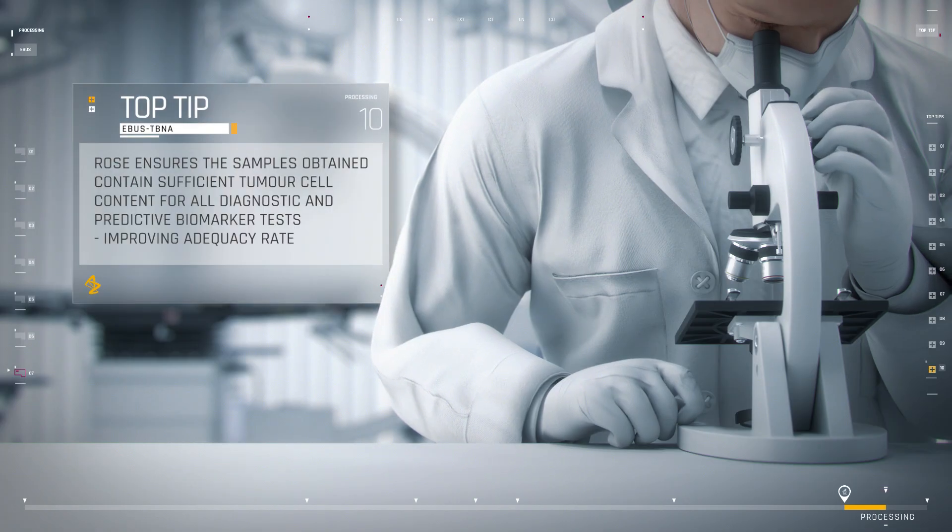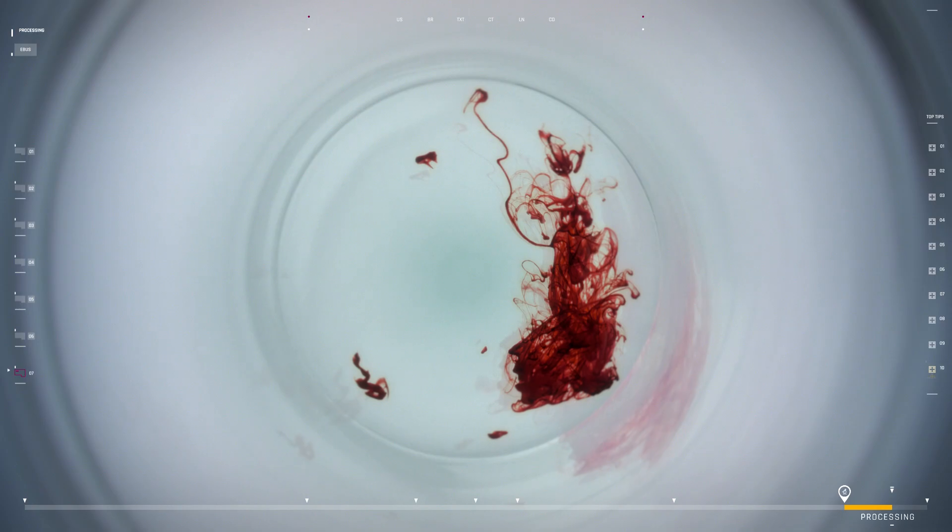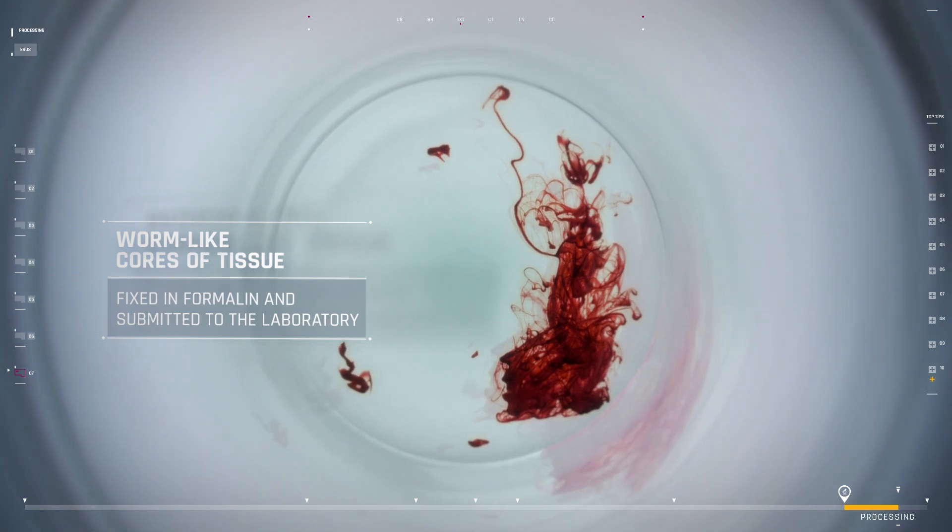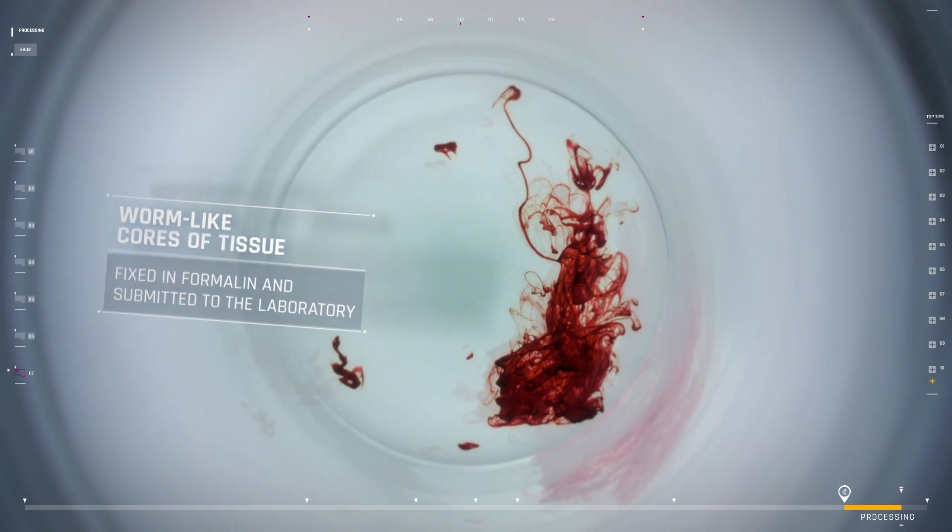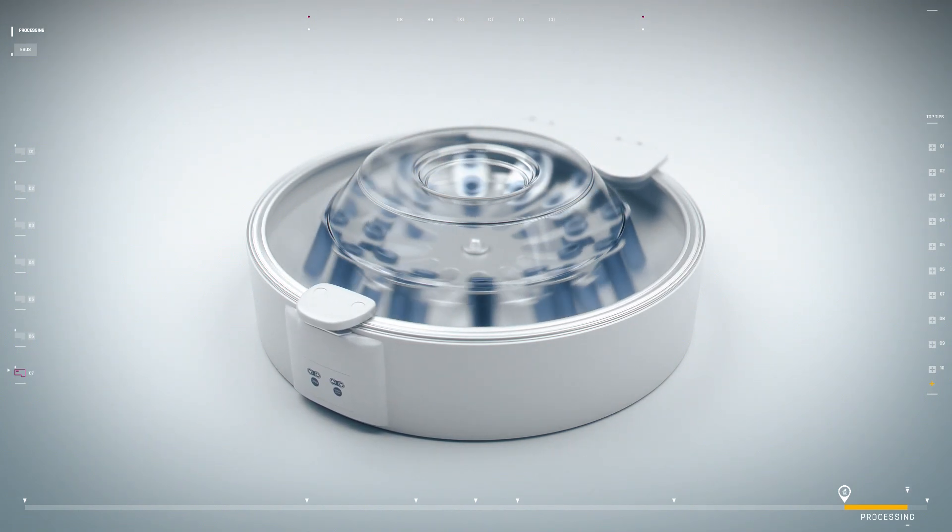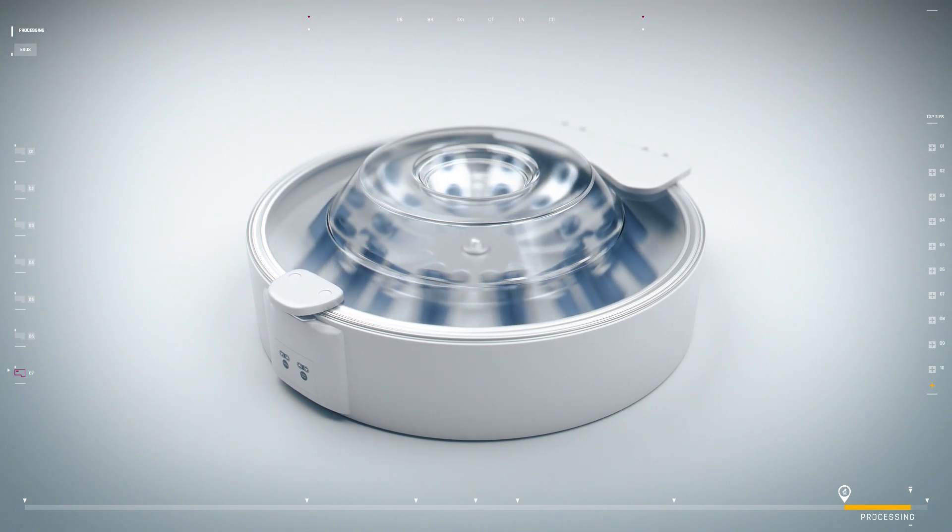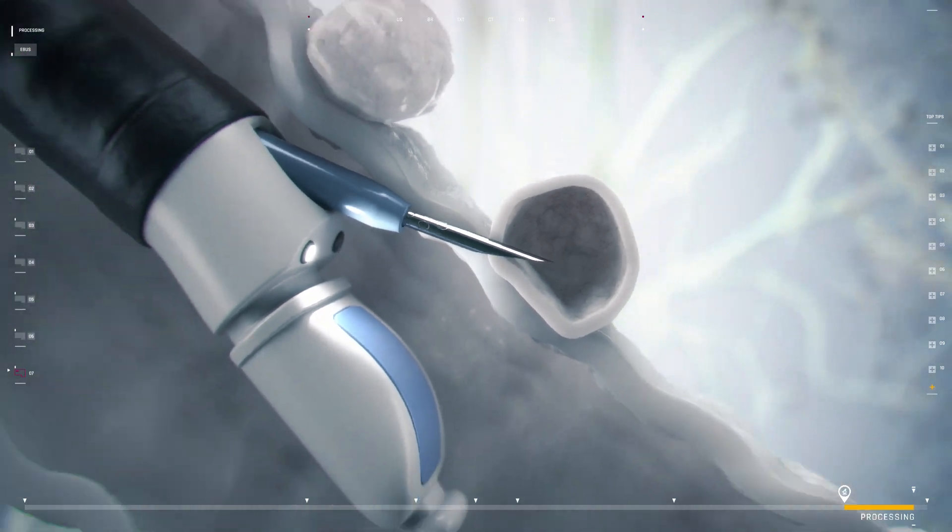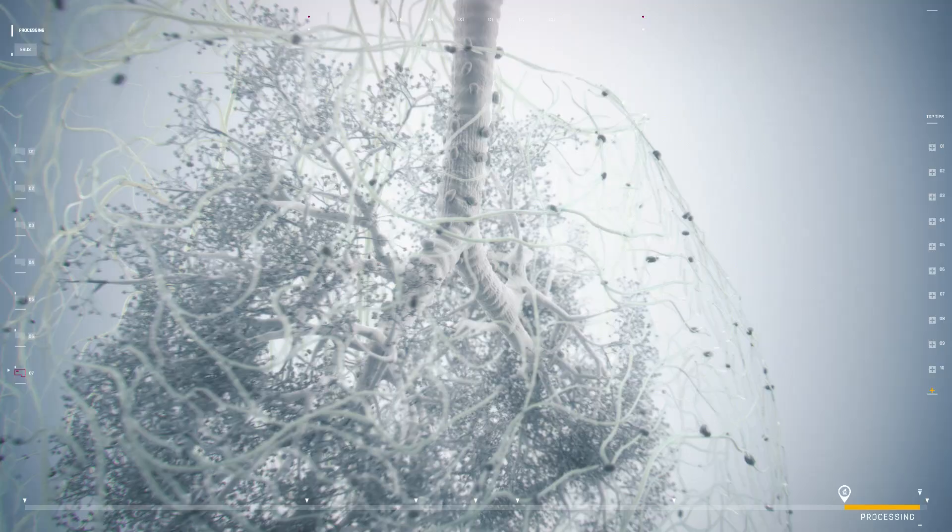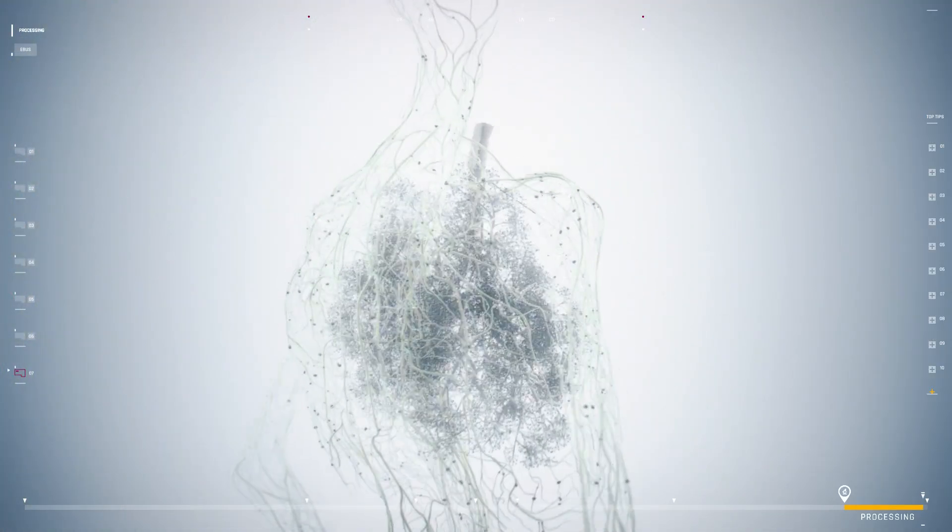EBUS can also provide worm-like cores of tissue that are submitted to the laboratory in formalin. The samples are spun down to provide a cell block and allow further processing like histological specimens. Samples obtained via EBUS should be suitable for establishing a tumor phenotype as well as allowing analysis of predictive biomarkers.